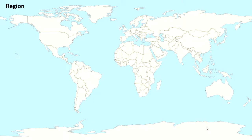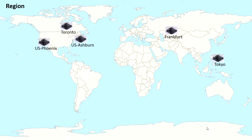Let's understand OCI architecture. In OCI architecture, the first thing you will notice is a region. These are nothing but Oracle data centers at different places in the world. They have data centers in US Phoenix, Ashburn, Toronto, Frankfurt, and Tokyo, and there might be future data centers coming up.